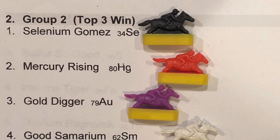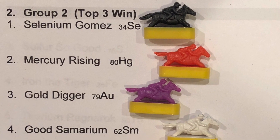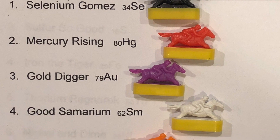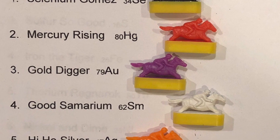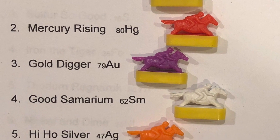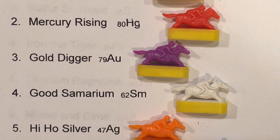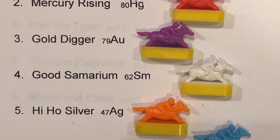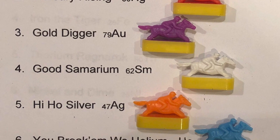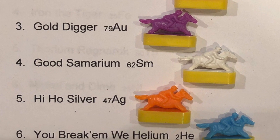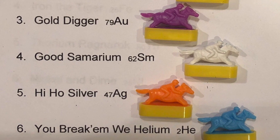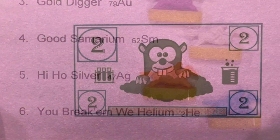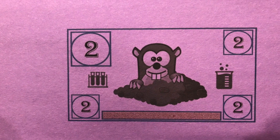Okay, for race two: the first position, Selenium Gomez, the black horse. The second horse, Mercury Rising, the red horse. The third horse, Gold Digger, represented by the purple horse. Good Samarium is in the fourth position, the white horse. The fifth position is Hi-Ho Silver, the orange horse. And the sixth position, You Break 'Em We Helium, the blue horse.